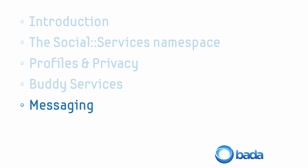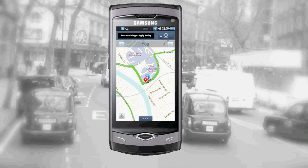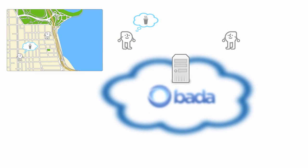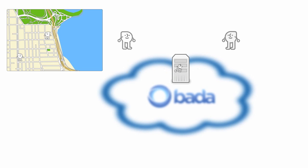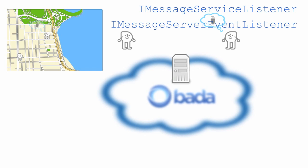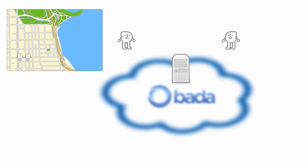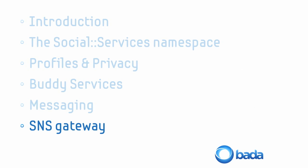Messages between buddies are sent using the Bada server. Messages are stored on the server for a certain length of time and retrieved at a set time interval. The minimum interval of this polling is 30 seconds, so it means you can't actually use the Bada server for an instant messaging type of service. The MessagingService class deals with sending and receiving messages, and the iMessageServiceListener and iMessageServiceEventListener classes process the response received from the server when sending and receiving messages.